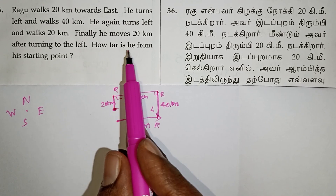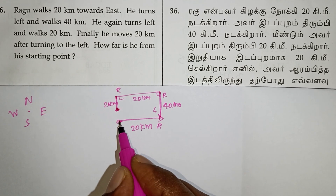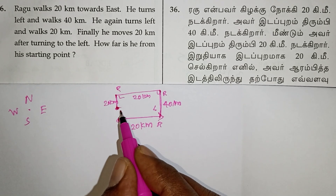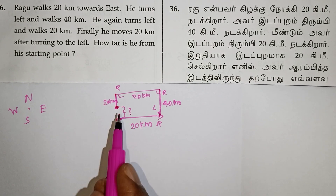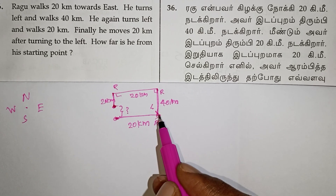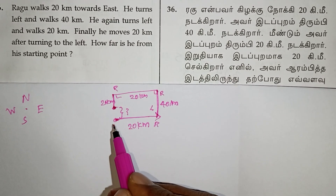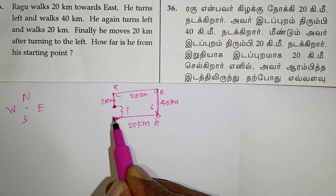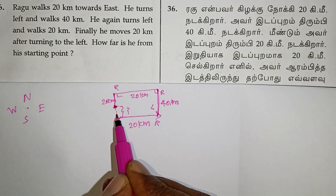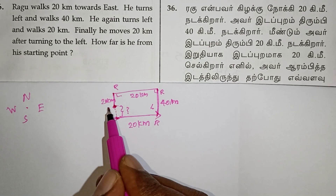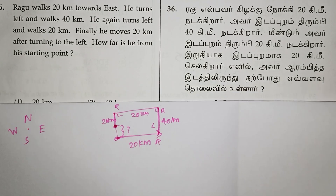How far is he from the starting point? Starting point — you will see it is 20km. If you go 40km down, there's 20km. So this is the starting point and 20km will remain.